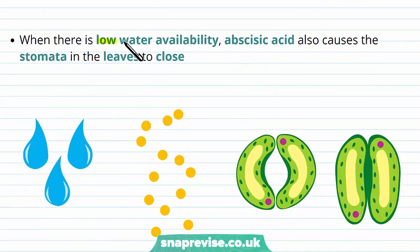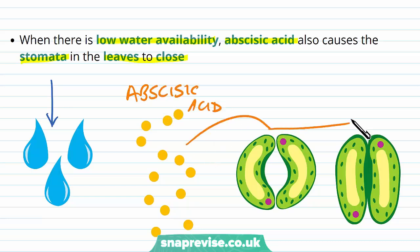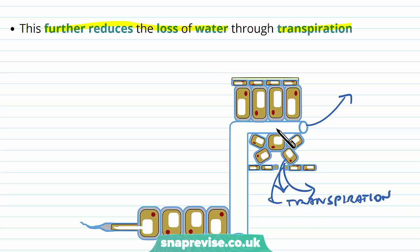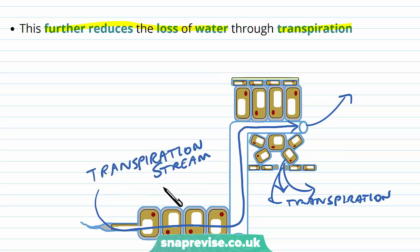When there is low water availability, abscisic acid causes the stomata in the leaves to close up. If water availability is very low and is not being absorbed at the roots, abscisic acid is released, causing the stomata to go from an open to a closed phase. This reduces water lost through the stomata. If the transpiration stream is taking water through the roots, up the stem, and along the xylem, and water availability is very low at the root end, we can't afford to lose water through transpiration. The abscisic acid levels rise, close the stomata, and water is maintained.